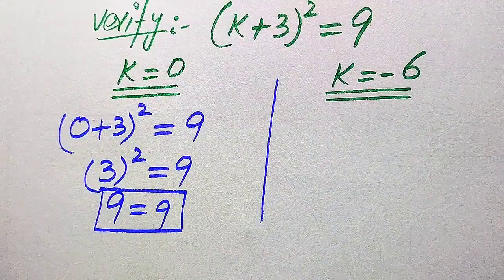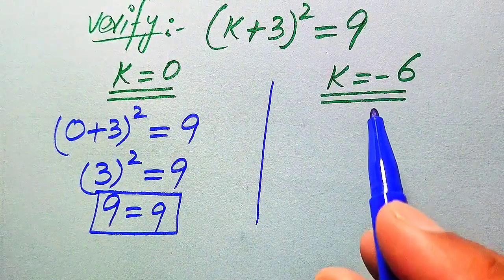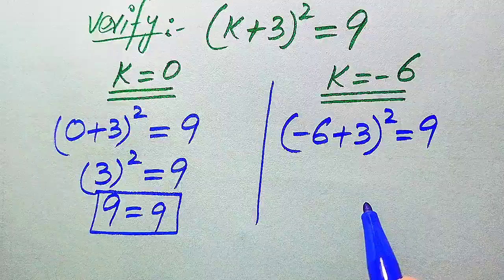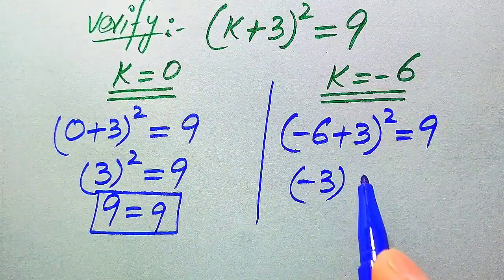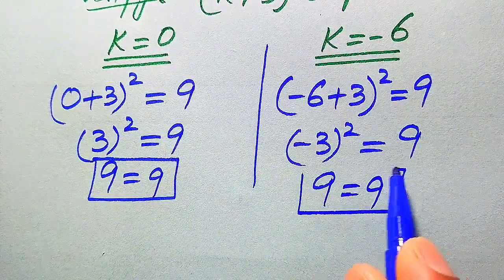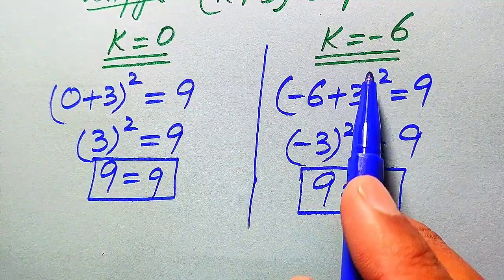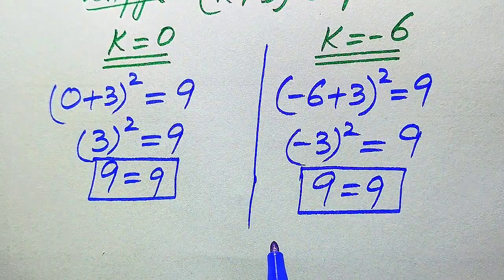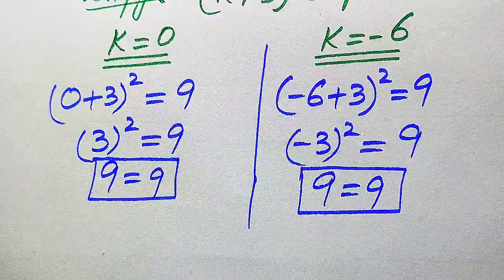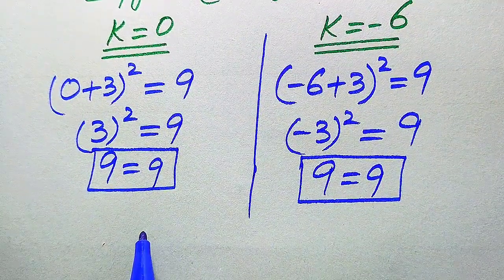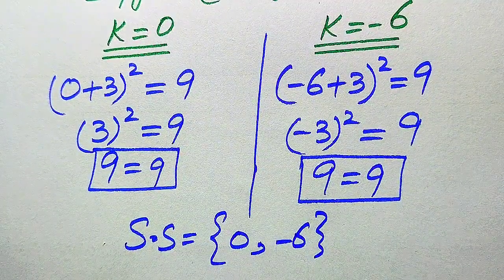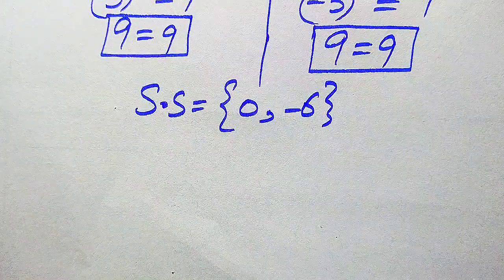Now we verify k = -6. Substituting into the left-hand side: (-6 + 3)² = (-3)² = 9, which equals 9. Both sides are equal, so k = -6 also satisfies the equation. Both values satisfy the given question statement, so the solution set from the first method is {0, -6}.